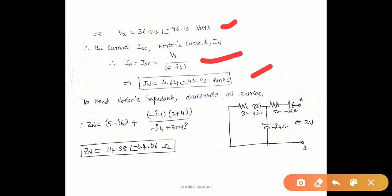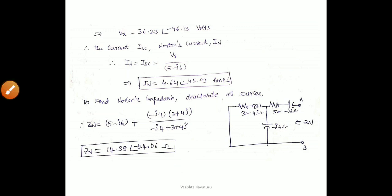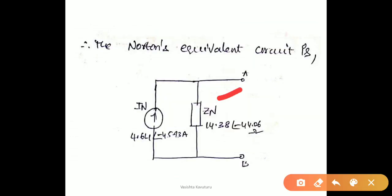After calculating Norton's current, we calculate Norton's impedance. To calculate Norton's impedance, we remove the load to form an open circuit and deactivate all sources. Since no load is given, the terminals are already open, so we deactivate the voltage source. From the equivalent circuit with respect to terminals A and B, 3 plus J4 and minus J4 are in parallel, and this parallel combination is in series with 5 minus J6. Therefore, the Norton's impedance is 14.38 at an angle minus 44.06 ohms. The Norton's equivalent circuit is drawn by connecting current source IN in parallel with Norton's impedance.